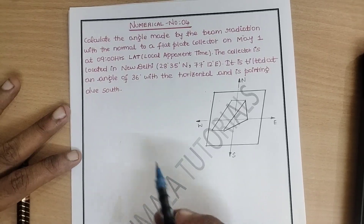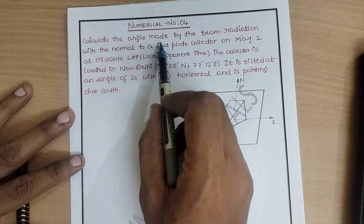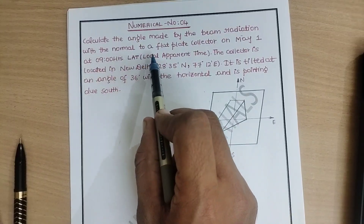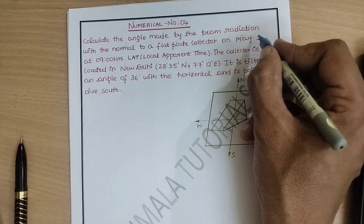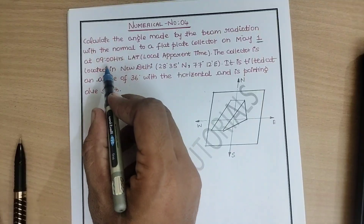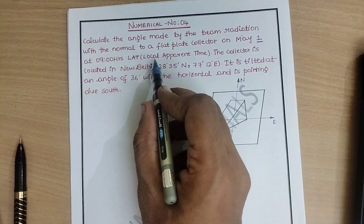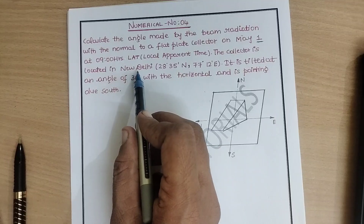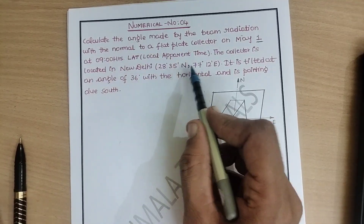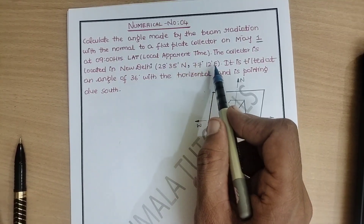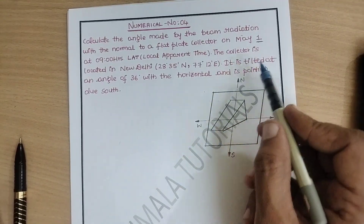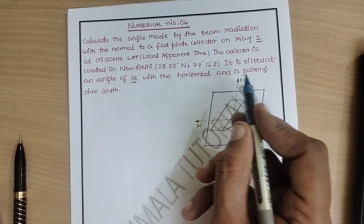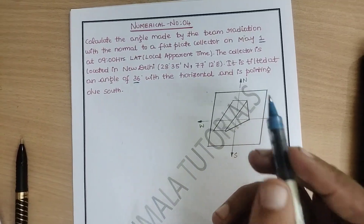The question is like this: calculate the angle made by the beam radiation with the normal to a flat plate collector on May 1st at 9 hours LAT (local apparent time). The collector is located in New Delhi. It is tilted at an angle of 36 degrees with the horizontal and is pointing due south.